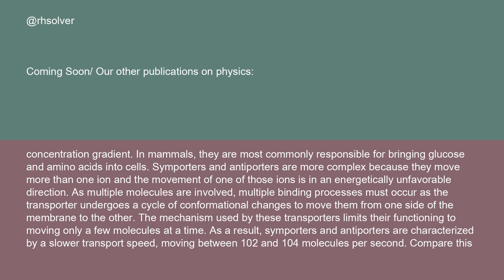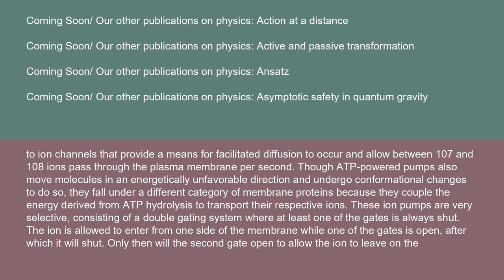Symporters and antiporters are more complex because they move more than one ion and the movement of one of those ions is in an energetically unfavorable direction. Multiple binding processes must occur as the transporter undergoes a cycle of conformational changes. This limits them to moving only a few molecules at a time, resulting in a slower transport speed of between 10² and 10⁴ molecules per second, compared to ion channels that allow between 10⁷ and 10⁸ ions per second.